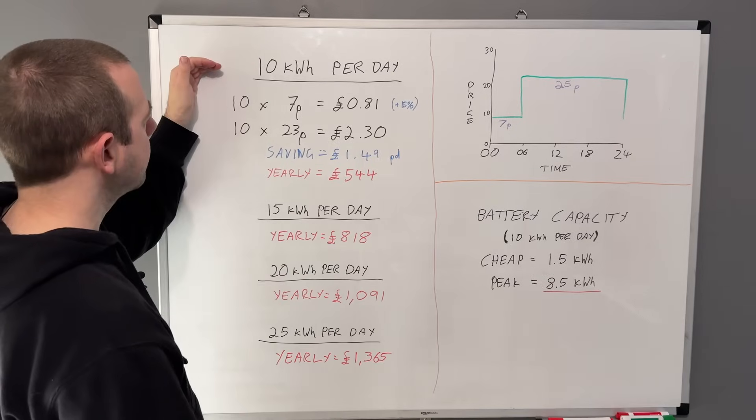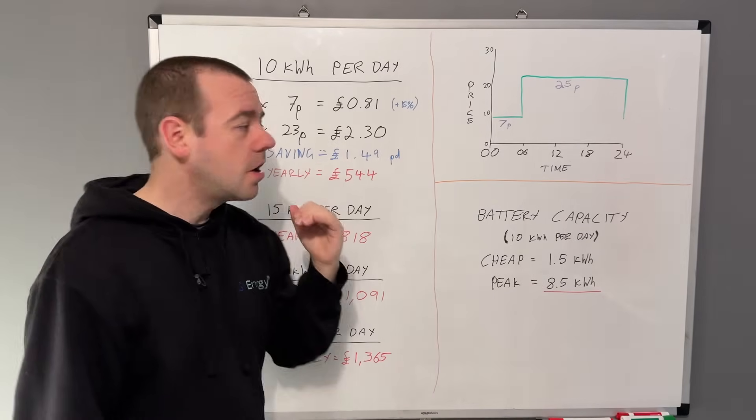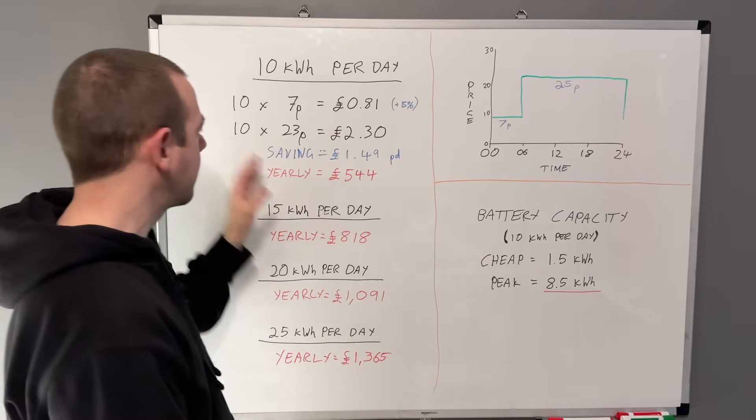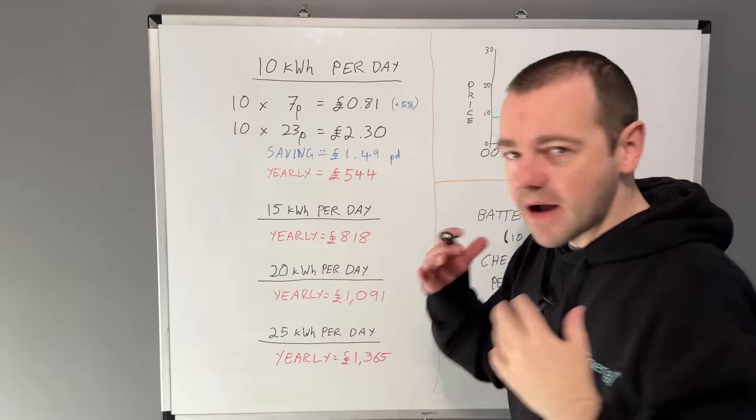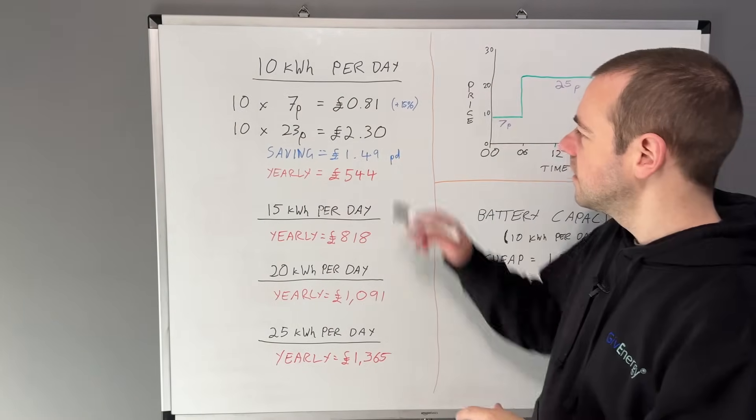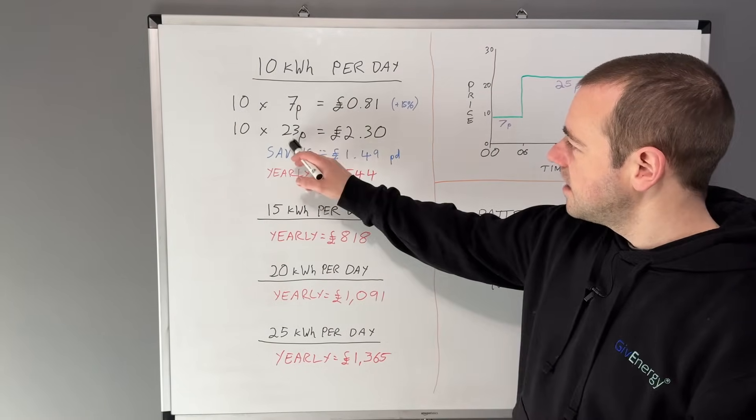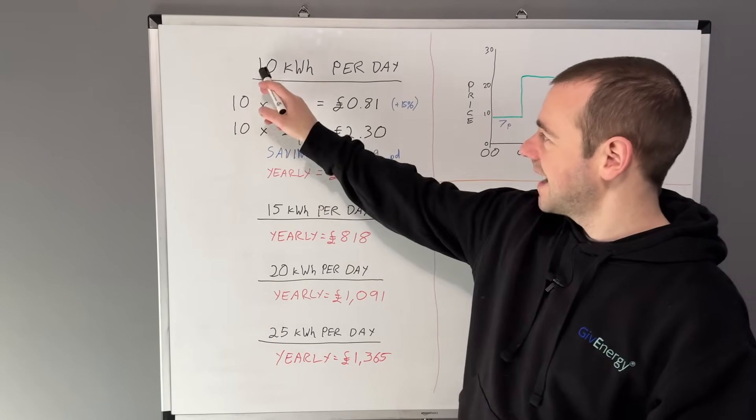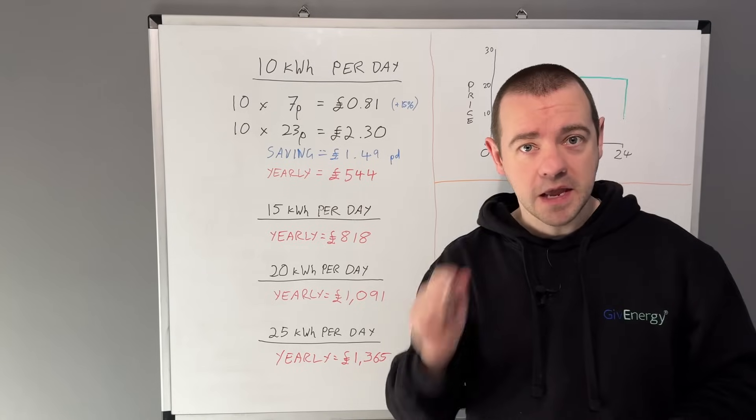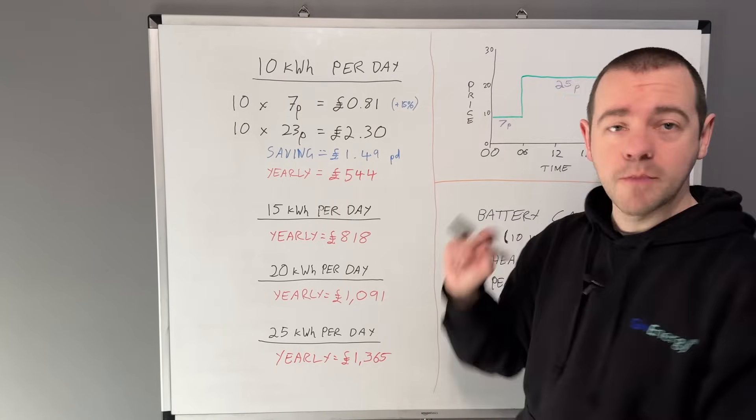So in this example, I've based it on 10 kilowatt hours of electricity usage per day. So that means that if I'm on a flat rate tariff at 23p, then that is simply 10 times 23 pence, which comes to £2.30.